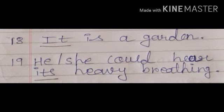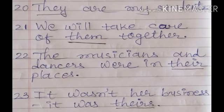Number nineteen: he or she could hear its heavy breathing. In this sentence, 'its' is a pronoun — that's why I underline it. Number twenty: they are my students. Here in this sentence, 'they' is a personal pronoun. Number twenty-one: we will take care of them together. Hum dono milke uska dhyan rakhenge. Here, 'them' is a pronoun.